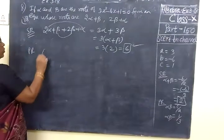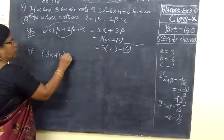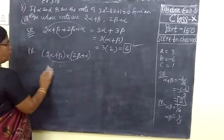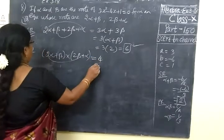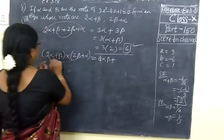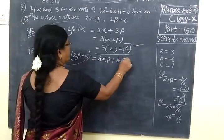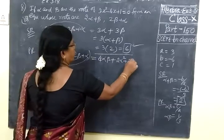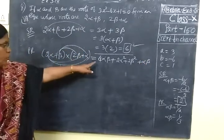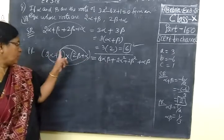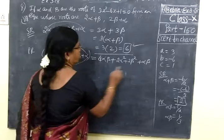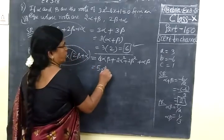Next, you find product of the roots. 2 alpha plus beta into 2 beta plus alpha. 4 alpha beta plus alpha squared plus 2 beta squared plus 2 alpha beta. 4 alpha beta plus alpha beta, 5 alpha beta. Take 2 common.